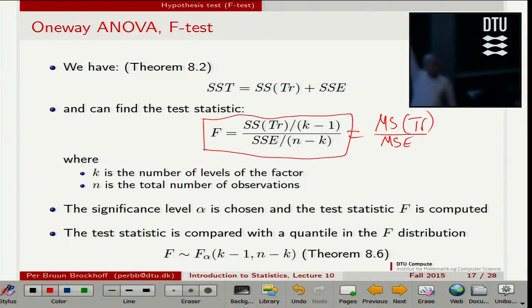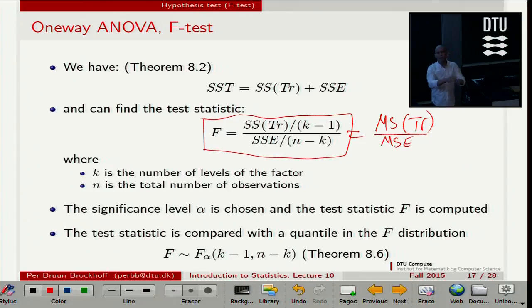the more the groups are different, the higher the numerator here. The higher the SS-TR and hence the MS-TR. So it's pretty clear if you think about it that this f measures some kind of relative group difference.